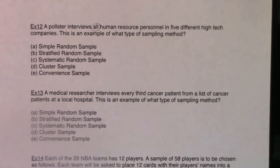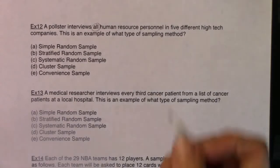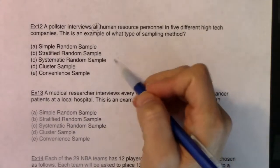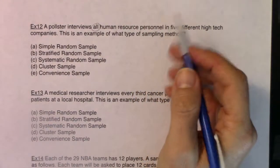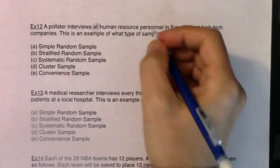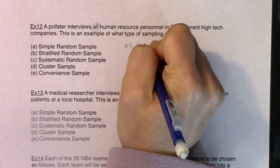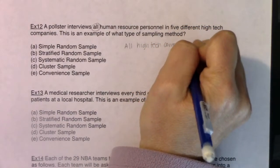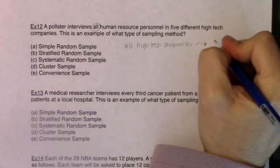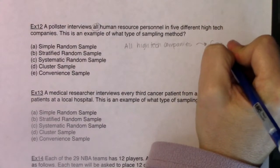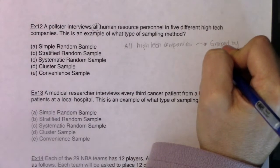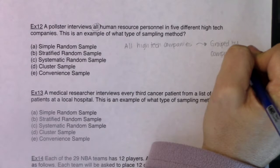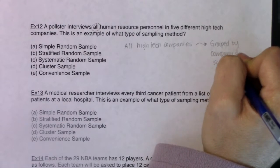We've got all human resource personnel in five different high-tech companies. So it sounds like they're trying to get a sample of human resource folks from the tech companies. Out of all the different high-tech companies — Amazon, YouTube, Google — there's a ton down in Silicon Valley. They've selected five. So from all high-tech companies, they broke you up by company, grouped you by company, and selected five companies — not just five people.